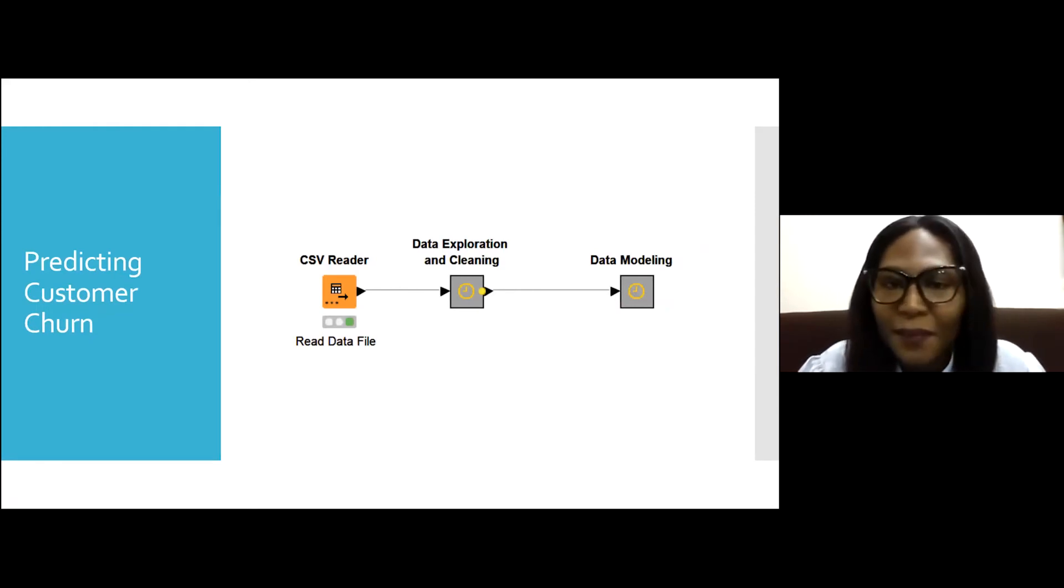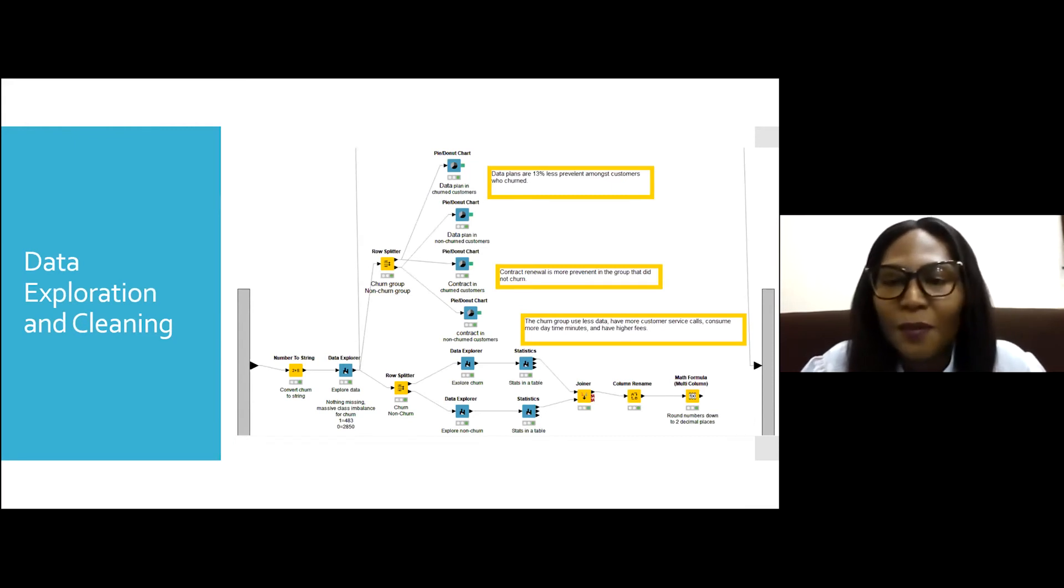So I'm going to walk you through an example of using this no-code approach to predict customer churn. Here I read in the data. Then in here, this is called a meta node - I have many nodes in there, and all of those nodes help with the data exploration and cleaning. And then finally, I have some nodes which deal with data modeling. For data exploration and cleaning, this is what the workflow looks like. This data set was relatively clean, so I don't have a lot of steps for data cleaning. All I had to do was to convert the churn to a string variable type because it came in as a number. And for a classification problem, the target needs to be a string. Here I explored the data to see if I have anything missing. I built some graphs to see if I can find variables which could explain churn. For instance, I found that people who don't have a data plan are more likely to churn.